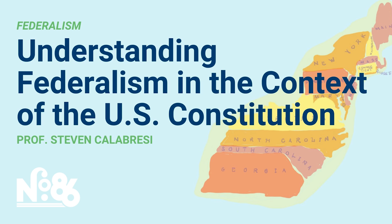Since the original 13 states were admitted to the union, 37 additional states have applied for and been admitted to the union. In general, in order to be admitted, the voters in a state have to vote that they want to join the union, come up with a written constitution that Congress determines is Republican in form, and then Congress can admit the new entity as a new state. Every new state is entitled to at least two senators and one representative, and possibly more representatives depending on its population.